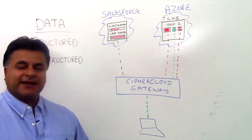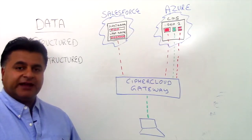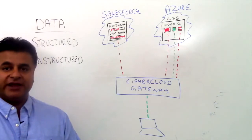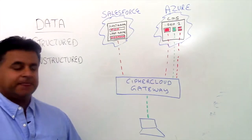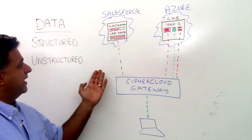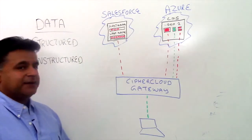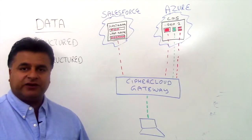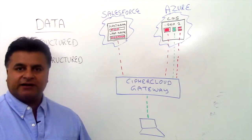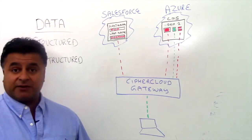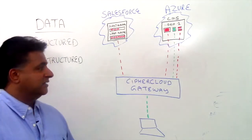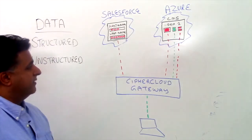Let's talk about a case study where you would use structured data, unstructured data, and in the third scenario, the combination of the two. In this example, we have structured data where people want to protect PII information in the cloud. It could be for a financial institution or healthcare, where they want to protect patient records, medical records, financial transactions, or financial records. That could be done in a structured environment.